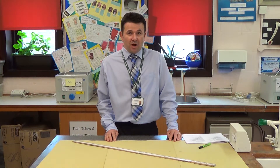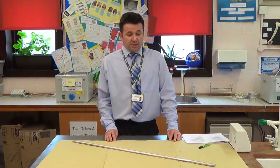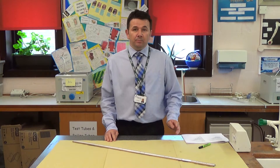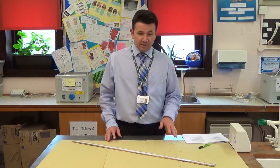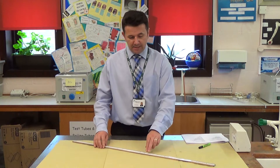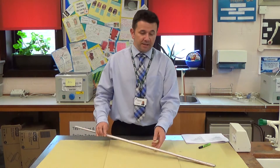Welcome to GCSE Biology Required Practical Activity 7, which is looking at the effects of practice on reaction times. To do this experiment, we're going to use a reaction timer, which in this case is a ruler.